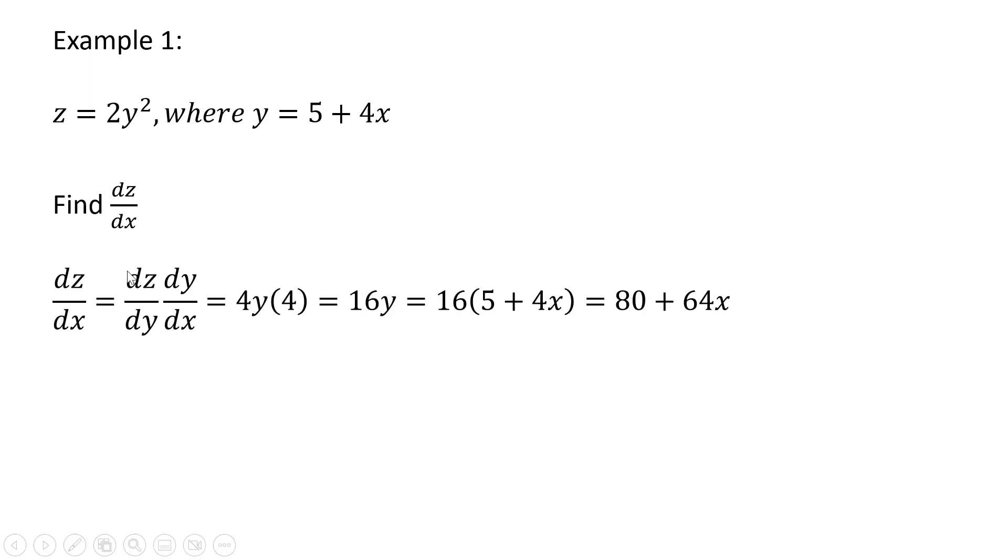So doing that, we're going to take the derivative of z with respect to y, and then multiply it by the derivative of y with respect to x. So first, the derivative of z with respect to y. Taking the derivative of 2y squared gives us 4y.